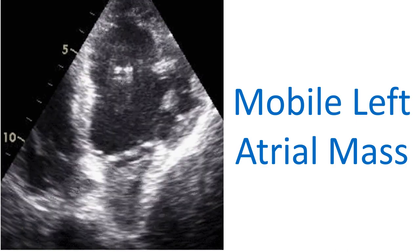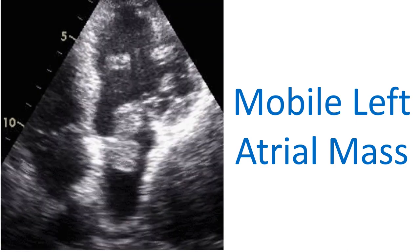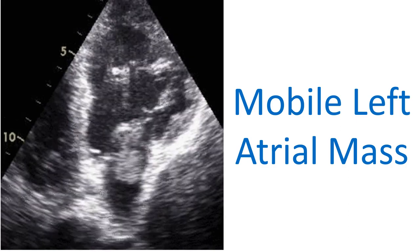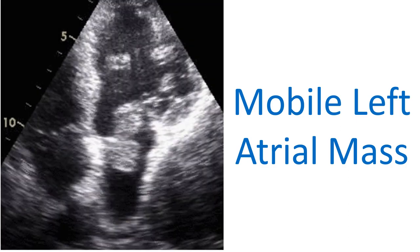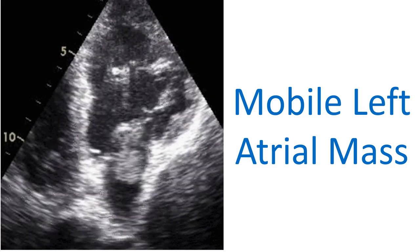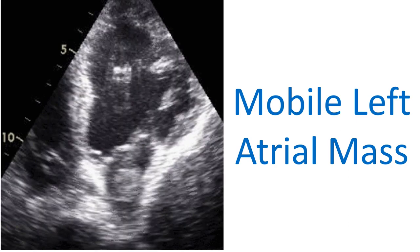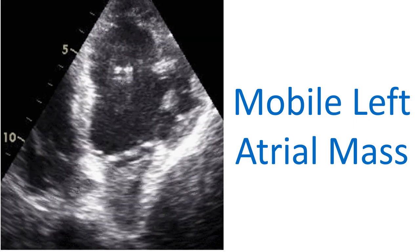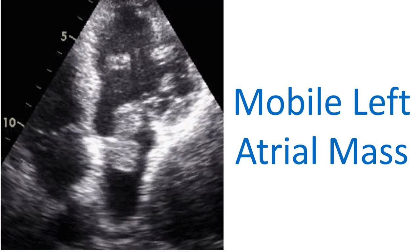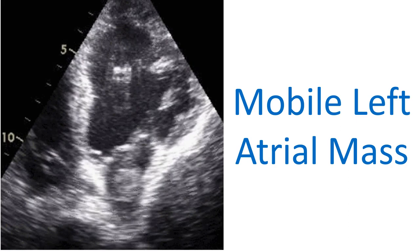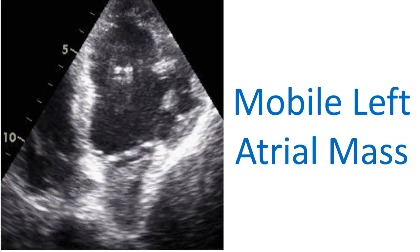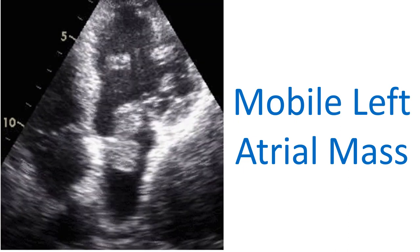Sometimes left atrial myxoma arises from the interatrial septum and has a long stalk. The long stalk permits mobility so that the tumor can easily prolapse into the left ventricle in diastole.